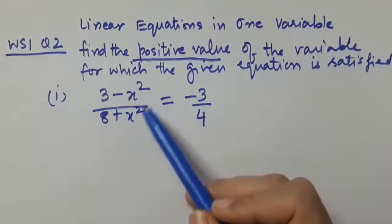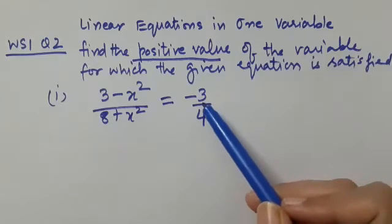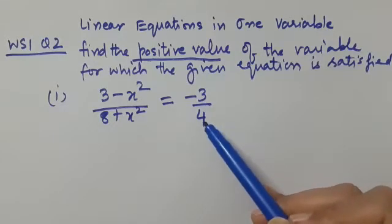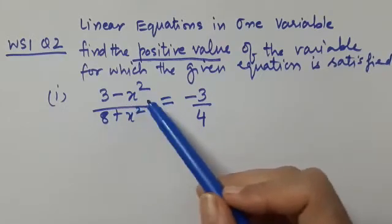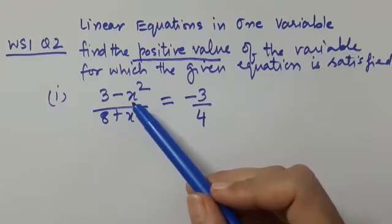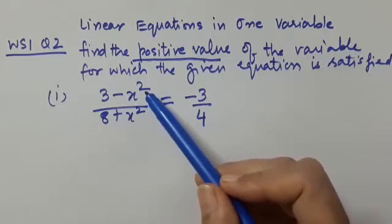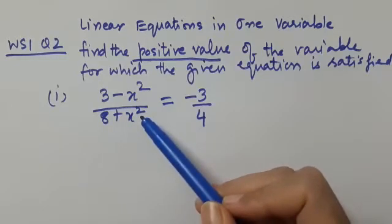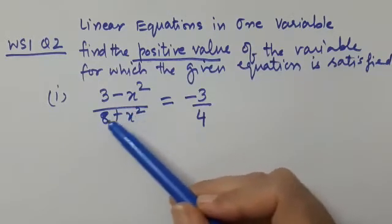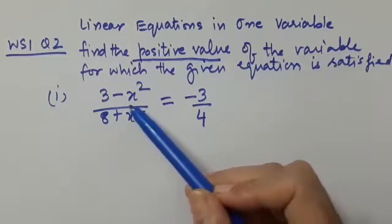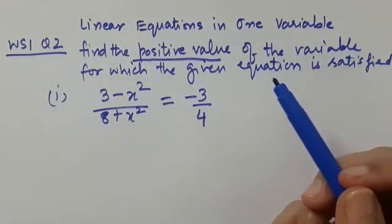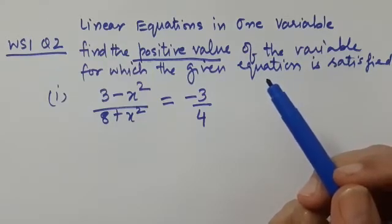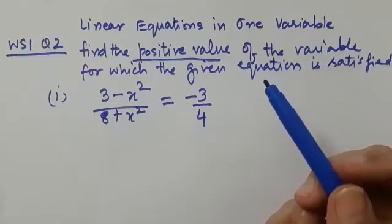The equation is: (3 − x²) / (8 + x²) = −3/4. If you observe, in the numerator the highest power of the variable is two, and in the denominator the algebraic expression 8 + x² also has degree two. So what we are going to do in these questions is first reduce them to a linear equation in one variable.